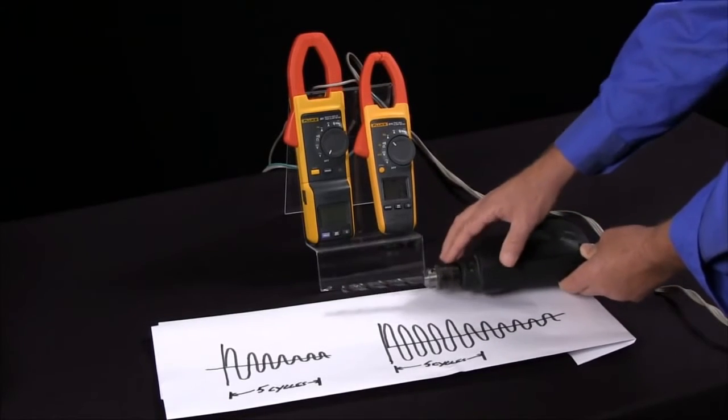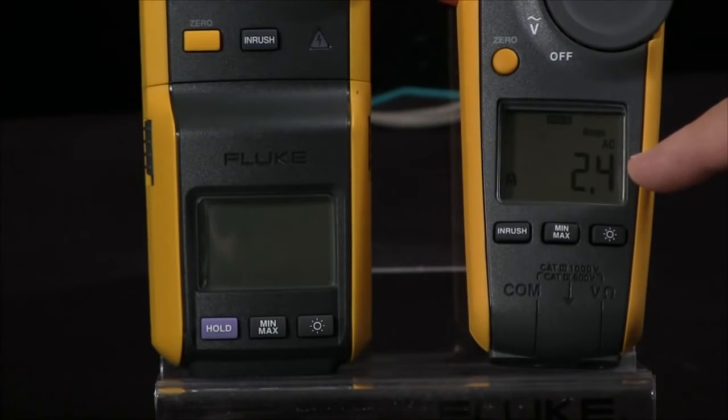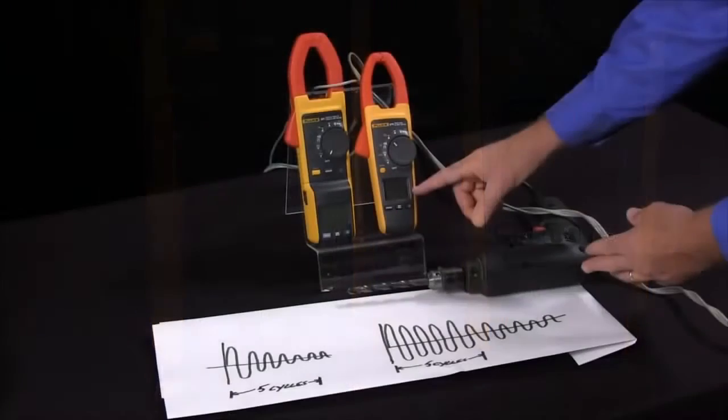It's also important to know how to do this so we can right-size our transformers. Here we have the running current of this particular motor at 2.4 amps. So what would you expect to see for an inrush current?